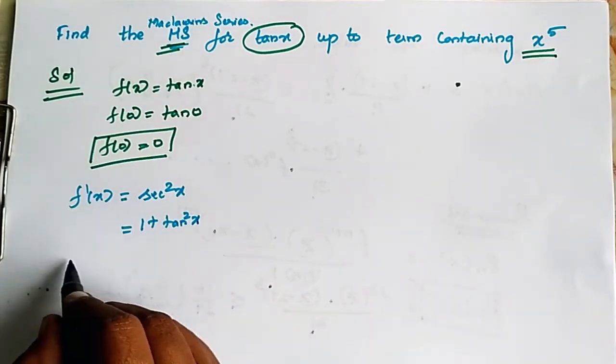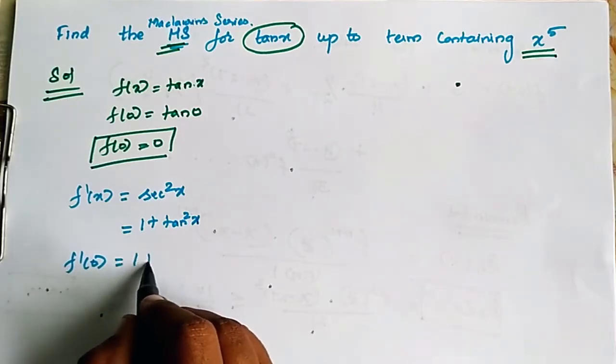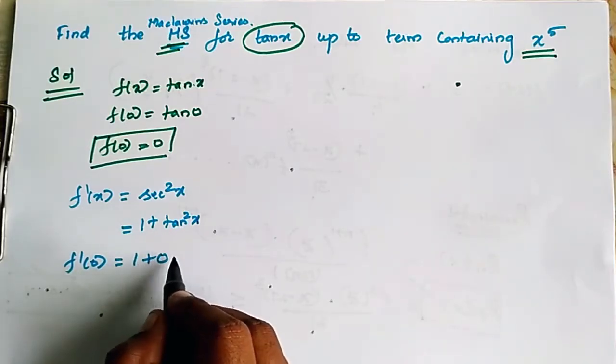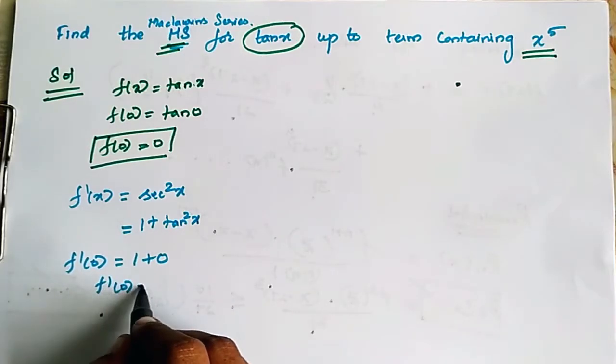So f dash of 0 is equal to 1 plus tan 0 is 0. So f dash of 0 is equal to 1.